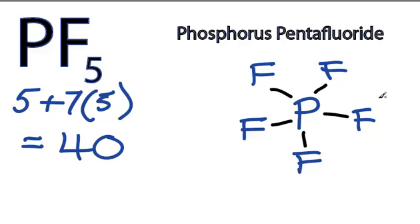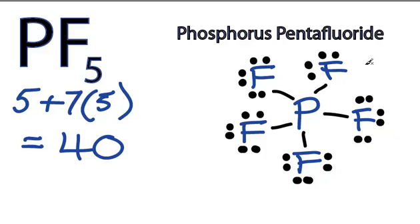And then we'll fill the octets for the outer atoms. We have 30 valence electrons: 2, 4, and 40.